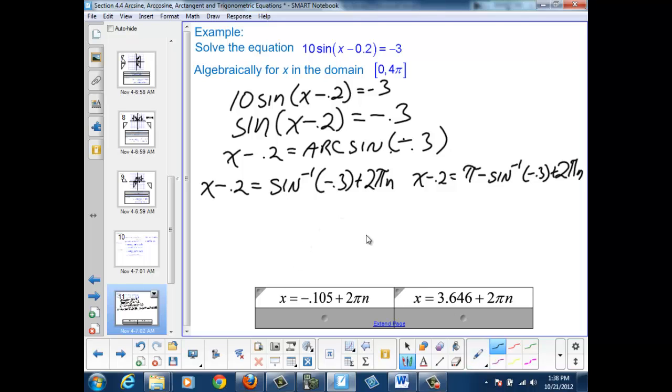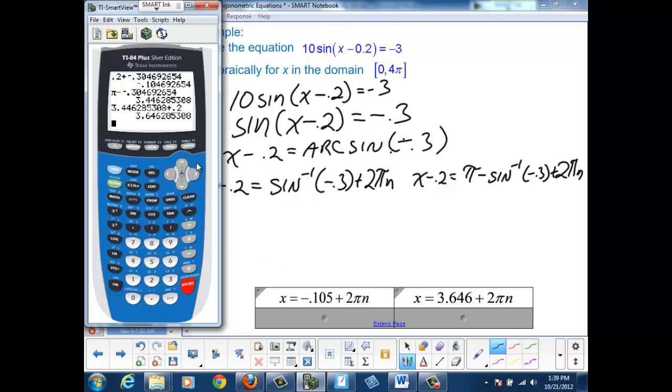To find the actual answers for this question, which means that all our values for x have to be between 0 and 4π inclusive, we go back to our calculator. We start with our initial value of -0.1046 and we will add 2π to get a value that falls within the specified domain: 6.178492. So there's my initial solution.